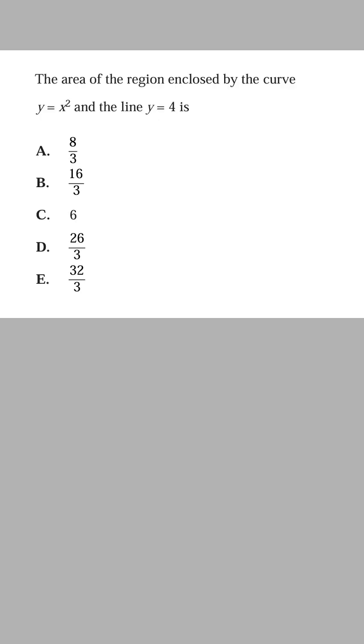As for this question, the first thing you want to do is sketch the graph of this region. And so we want the graph of Y equals X squared and then the line Y is equal to 4 and then coloring the region that we need.